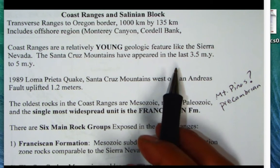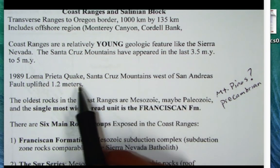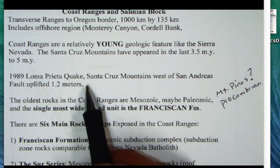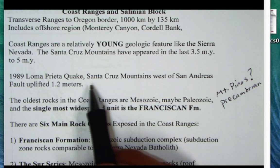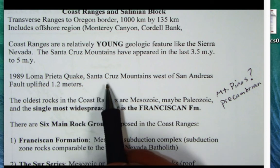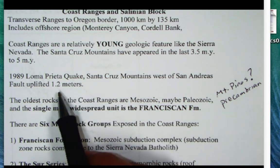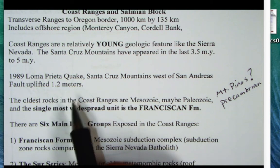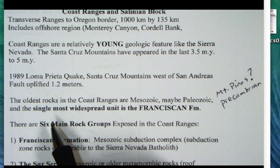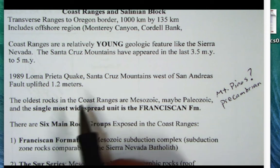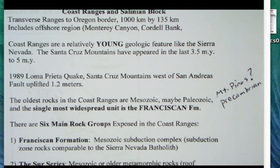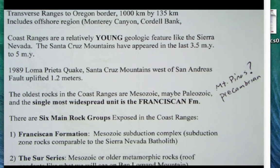As an example, during the 1989 Loma Prieta earthquake, the Santa Cruz Mountains west of the San Andreas Fault were uplifted by a little over three feet — 1.2 meters — showing that the mountains are still presently being pushed up. We'll talk about what type of movement occurs on the San Andreas Fault to enable that type of uplift.